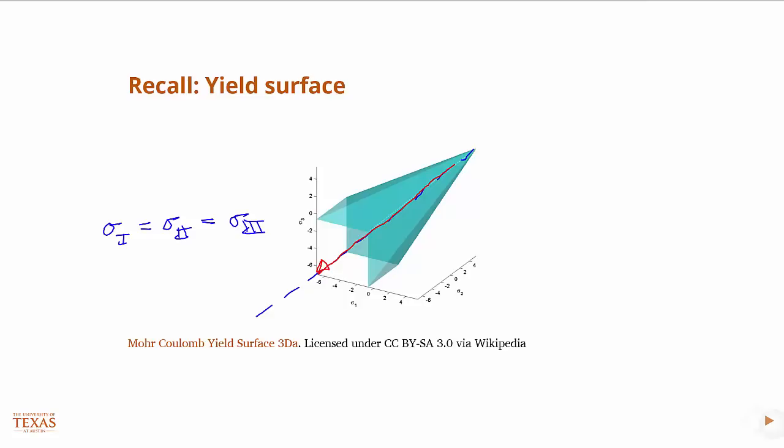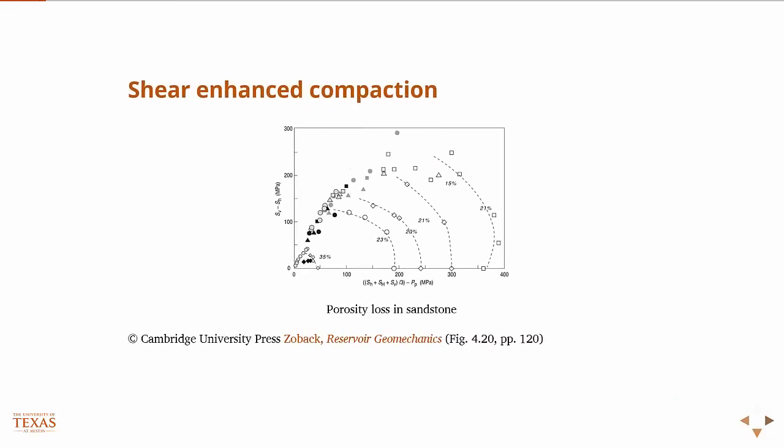Here's some data that basically shows that. This is sandstone data where the different colored dots, triangles, and squares all represent different types of sandstone, and they're all tested in triaxial configuration.